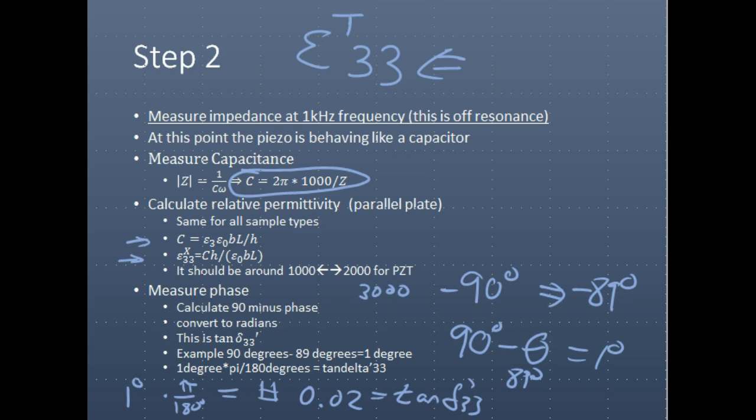This is the tangent delta in the 3-3 direction, measured for any of these type of samples: Kp mode, K33, K31. But you would still be getting your tangent delta, which is your dielectric loss, in your thickness direction, for thickness applied field and thickness developed polarization.